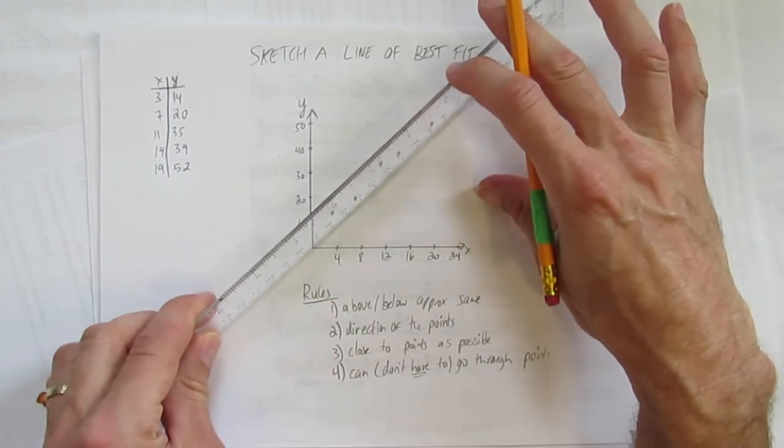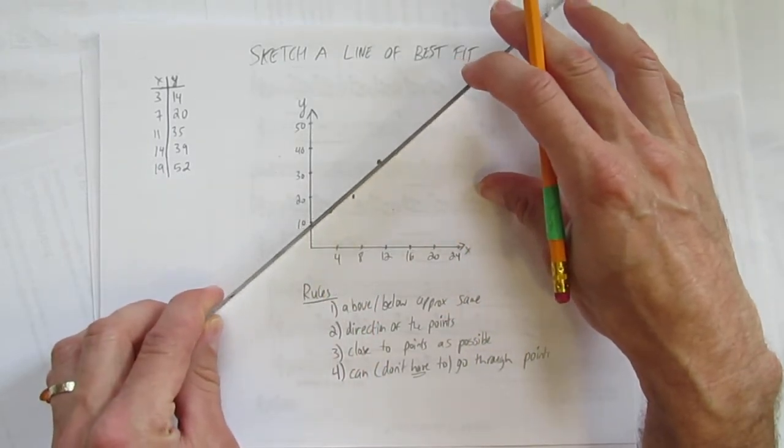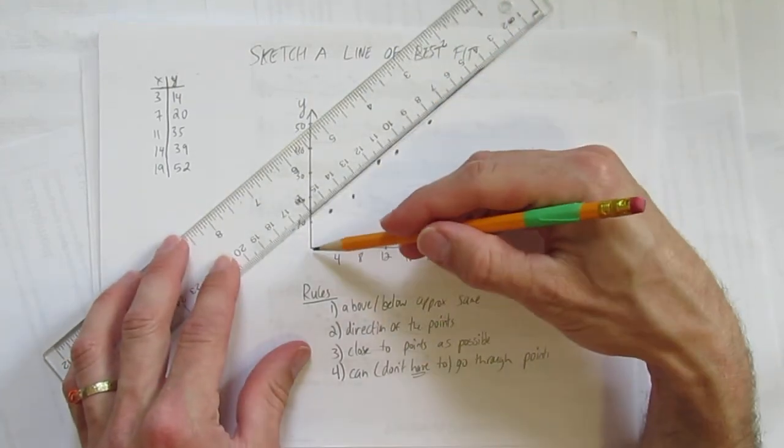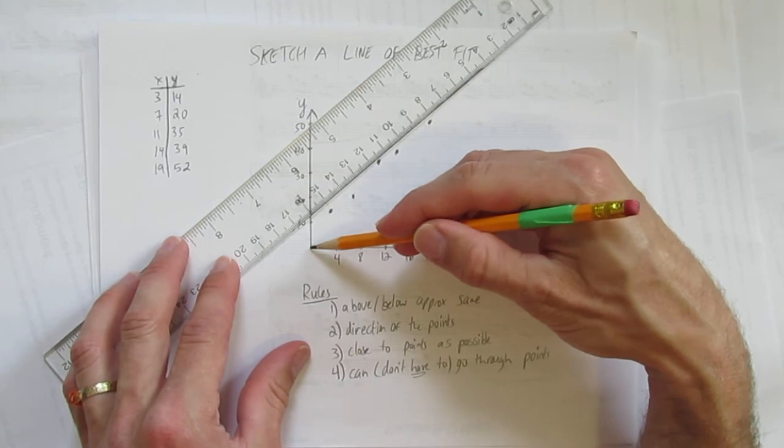Okay, sometimes I take my ruler and I put it like this so I can see points on both sides and kind of get a feel. And note too, you do not and likely won't go through zero, zero.